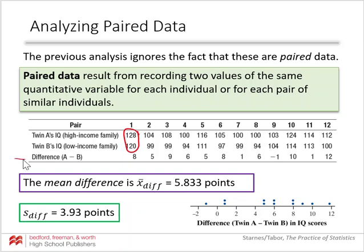Here we are really interested in the difference. We're doing twin A minus twin B to see how much higher or lower the IQ of the twin raised by a high-income family was than their twin. The mean of the difference is 5.833 points, and the standard deviation of the difference is 3.93 points. We have our dot plot here of the differences between twin A and twin B's IQ scores.